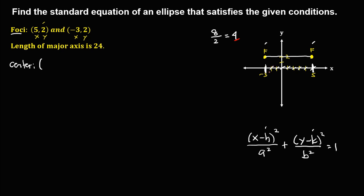Counting from the focus, start counting on the next point: 1, 2, 3, 4. So this is now the coordinate of the center of this ellipse. The x-coordinate of the center is positive 1 and y is positive 2. So the coordinate of the center is (1, 2). Therefore, h is equal to 1 and k is equal to 2.